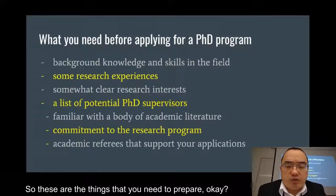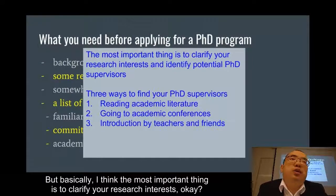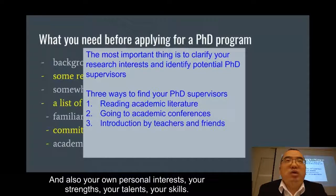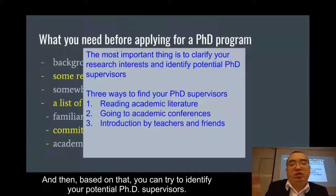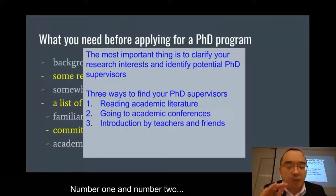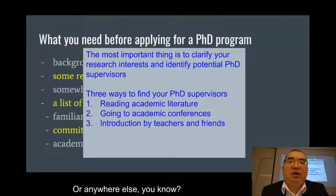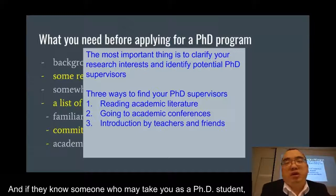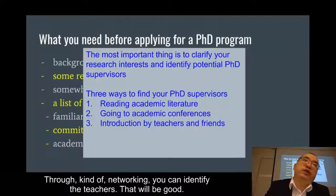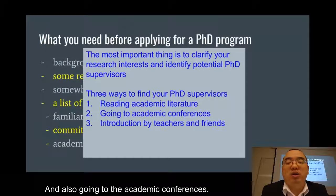These are the things you need to prepare before applying for a PhD. The most important thing is to clarify your research interests based on what you have learned, your personal interests, your strengths, talents, and skills. Then decide which area you want to focus on for your PhD. I want to talk about three different ways to find your PhD supervisors. The straightforward one is networking — talking to your teachers and friends at university, and if they know someone who may take you as a PhD student, that would be good.